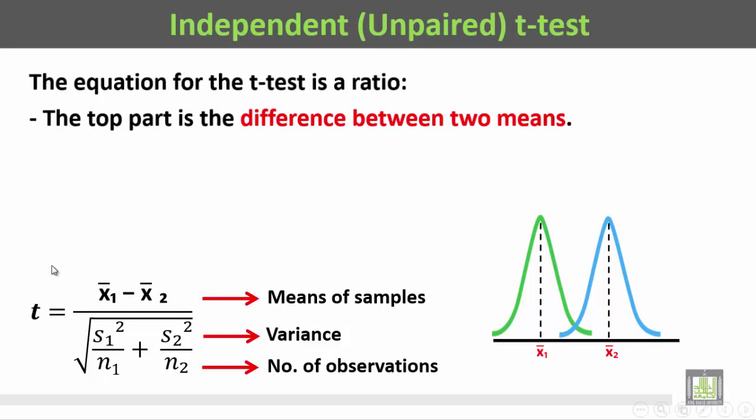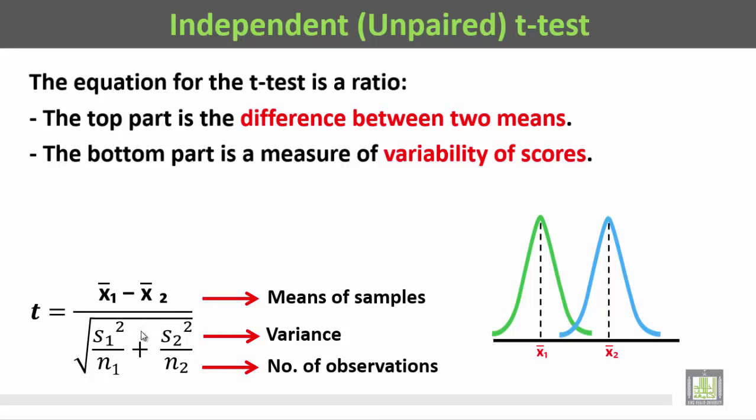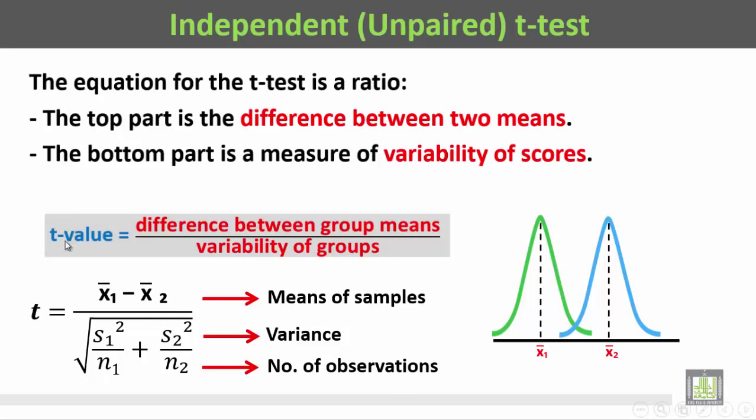The top part is the difference between the two means. The bottom part is a measure of variability of scores. So the t-value is the difference between the group means divided by the variability of the groups. This is the means in the top and these are the variances or the variability in both groups.